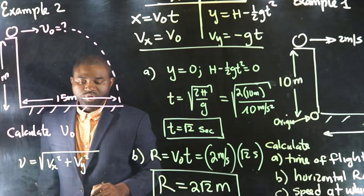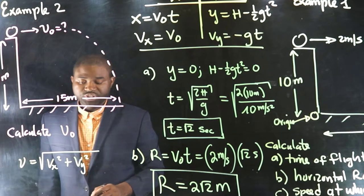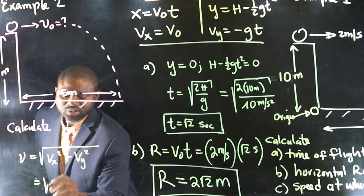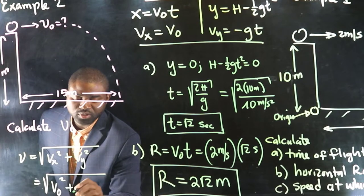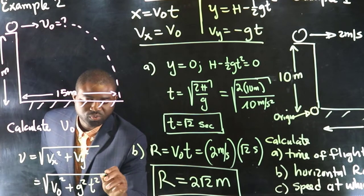But, what do we know? We know that the velocity in the x direction never changes. So, this is just going to be equal to v naught squared plus g squared t squared.